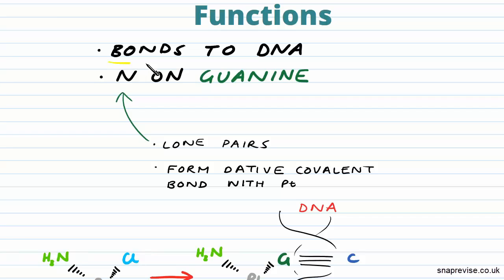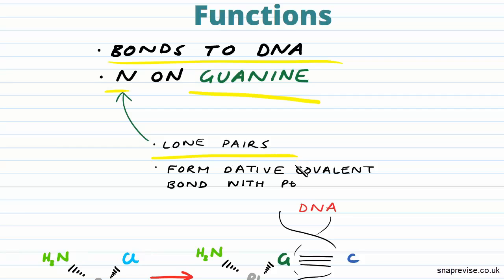Cisplatin bonds to DNA, and it bonds to the nitrogen on guanine, one of the nucleotides in DNA. It's the lone pairs of electrons on the nitrogen that allows the nitrogen to form dative covalent, or coordinate bonds, with the central platinum.